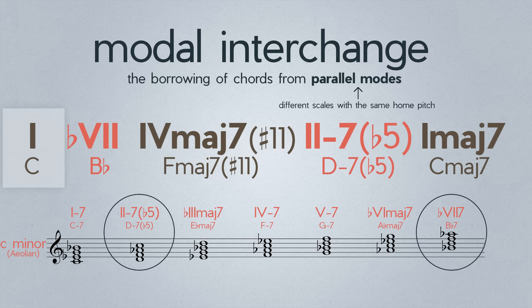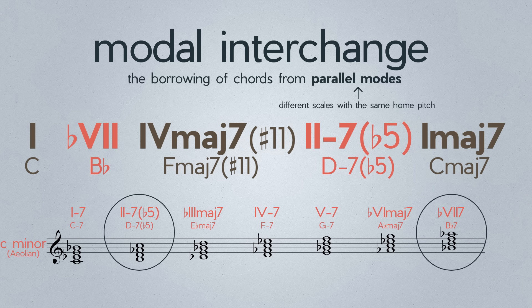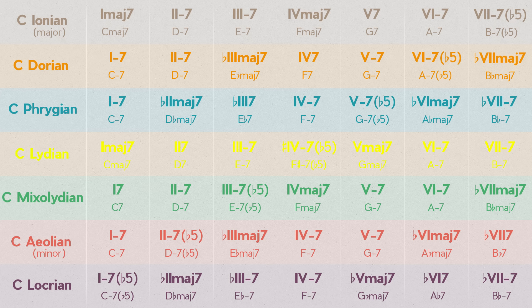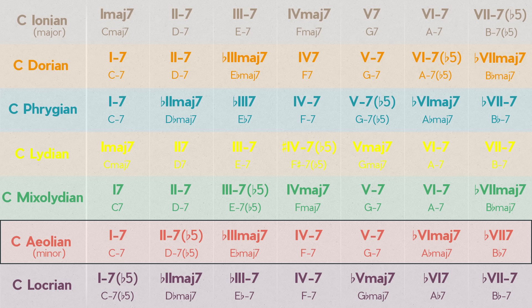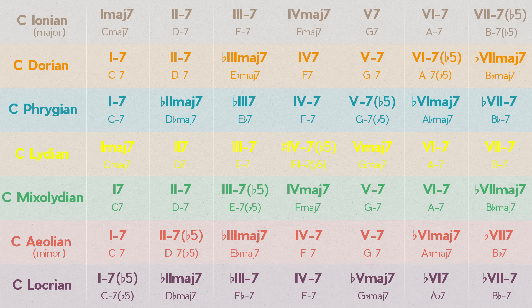Let's try another one. Modal interchange can help us to capture a wide range of highly specific emotions and atmospheres with our harmony. Now that we have the basic concept down, here are the diatonic chords from the seven modern modes all running parallel to one another. Not only can we borrow chords from the parallel minor, we can borrow any chords from any parallel modes. You can probably already imagine the number of possibilities here is massive.